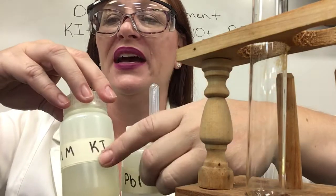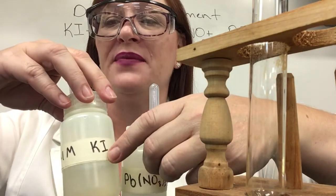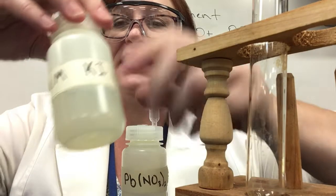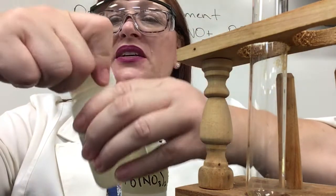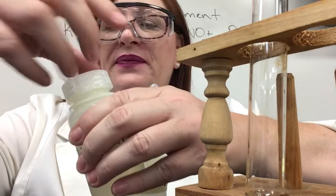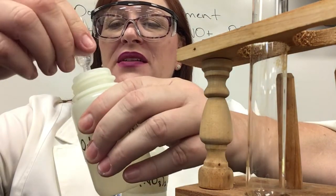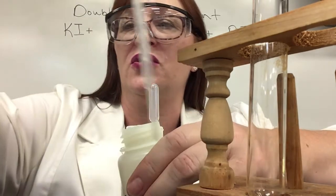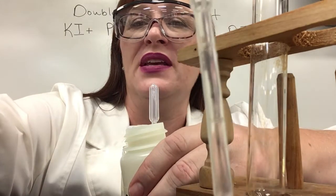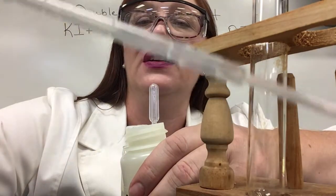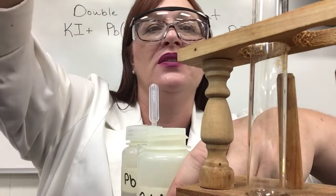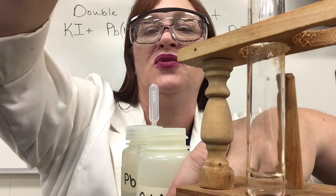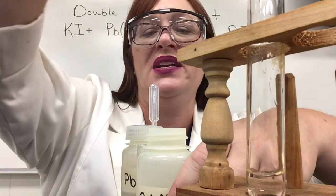This is KI — that's potassium iodide — and it is a clear liquid. Let me get some in my test tube and I'll show you what that looks like. Perfectly clear liquid, and I'm gonna squirt one squirt of that into my test tube there.